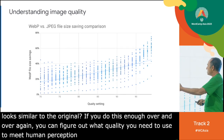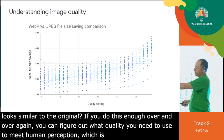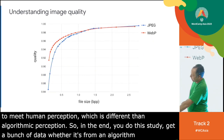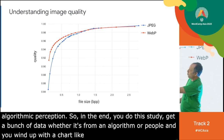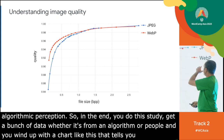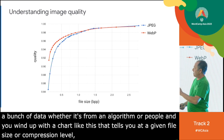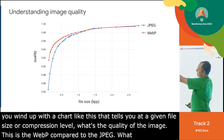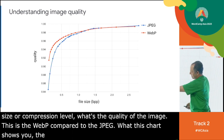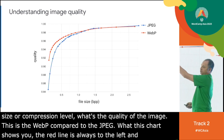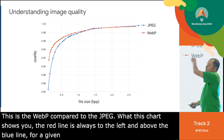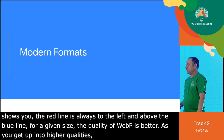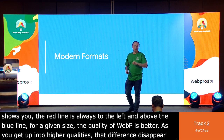You do this study, get data from an algorithm or people, and wind up with a chart that tells you at a given file size or compression level, what's the quality of the image. This chart compares WebP to JPEG, and because the red line is always to the left and above the blue line, it shows that for a given size, the quality of WebP is better. As you get into higher qualities, that difference disappears.